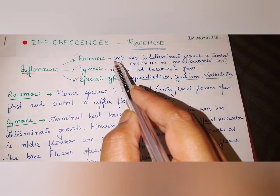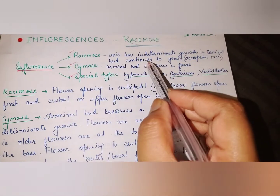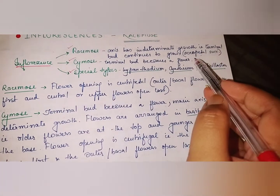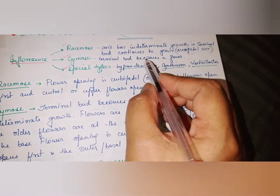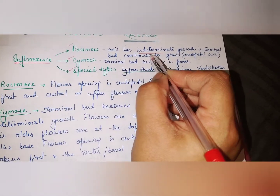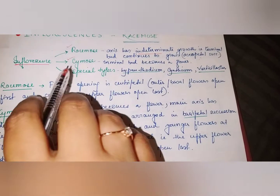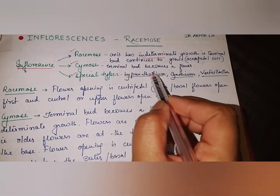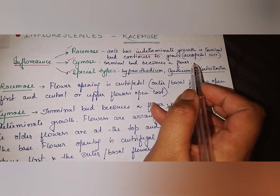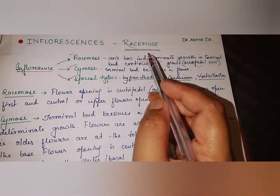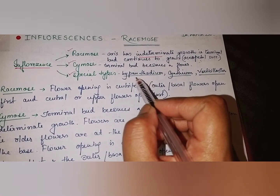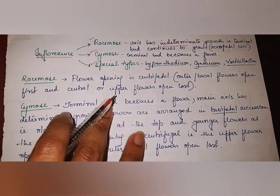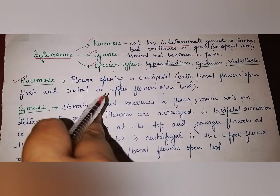Racimose inflorescence is one where the axis has indeterminate growth — the terminal bud continues to grow. Flowers open in acropetal succession and growth is indeterminate, meaning it goes on growing and doesn't stop. Next, in cymose inflorescence, the terminal bud becomes a flower, so growth is stopped — it is determinate, unlike racimose. Third are special types, which include hypanthodium and cyathium.